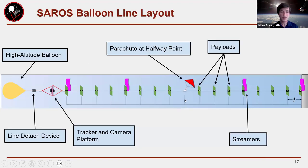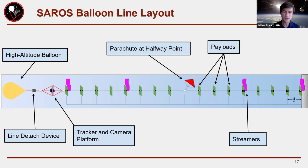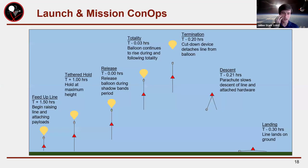Here's another diagram of the line setup: we have a flight termination device, a platform for tracking and cameras, all instruments mounted skyward, streamers for visibility, and a parachute mounted at the halfway point. The concept of operations is: tether the line, launch, sweep upward during eclipse totality, then terminate the flight — cut down — and the parachute carries the hardware down for landing.